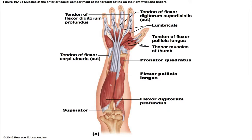The flexor digitorum profundus has extensive origins and is overlaid entirely by the flexor digitorum superficialis. Its origins include the coronoid process, the anterior medial surface of the ulna, and the interosseous membrane. Its insertion is by four tendons into the distal phalanges of fingers 2, 3, 4, and 5. Its prime action is to flex the distal interphalangeal joints; it is also a slow-acting flexor of any or all the fingers and assists in wrist flexion. The medial half is innervated by the ulnar nerve and the lateral half by the median nerve.